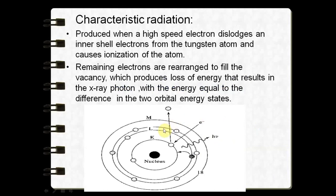Characteristic radiation accounts for approximately 30% of x-rays produced. In characteristic radiation, an incident electron reaches the innermost K shell and interacts with an electron there, ejecting it. A void is created in the K shell, and an electron from the L shell moves in to fill this void, producing characteristic radiation. The energy of this radiation is the result of the binding energy difference between the K shell and L shell energy levels.